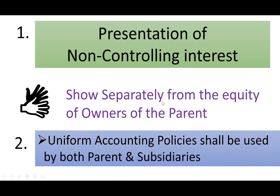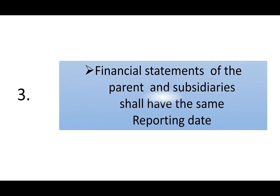Uniform accounting policies shall be used by both parent and subsidiaries. For example, if the parent's accounting year is January to December and the subsidiary is also January to December, that is straightforward. But if there is a difference, we have to do a reconciliation package, which is very troublesome. We also need to align the financial year-end and local taxation authority adjustments. The financial statements of parent and subsidiary shall have the same reporting date.